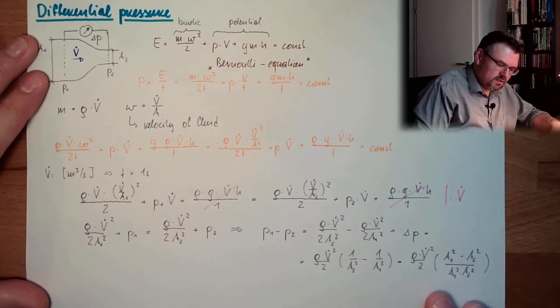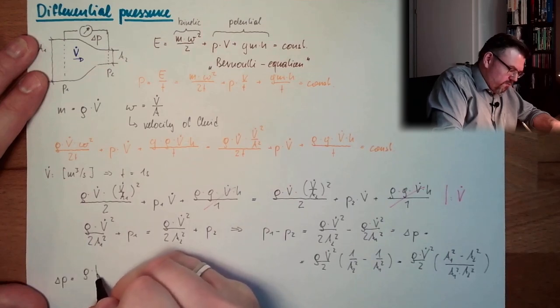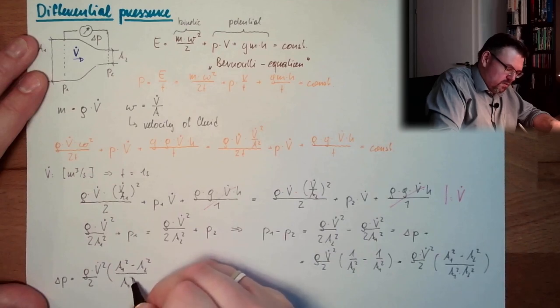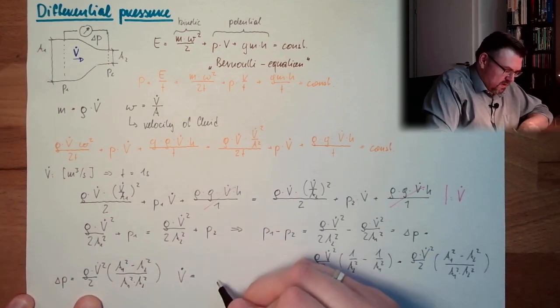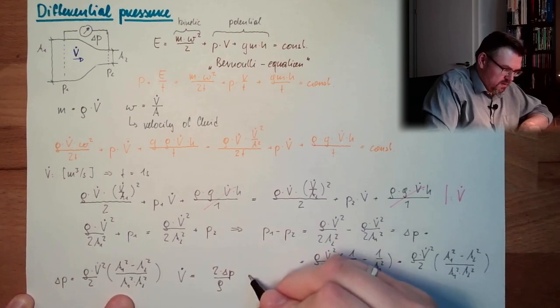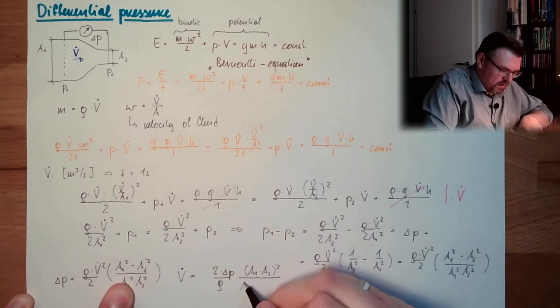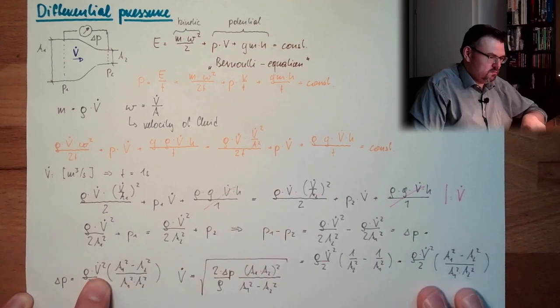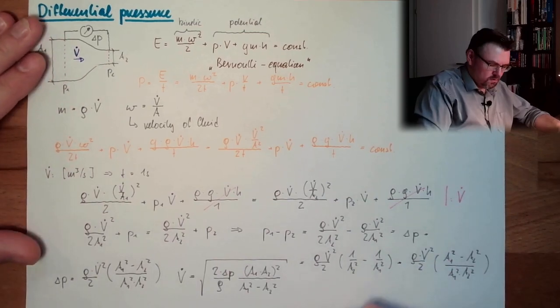So delta P, get this out. So actually this equals rho v-point squared half, 1 divided by A2 squared minus 1 divided by A1 squared. A2 squared minus A2 squared divided by A1 squared multiplied by A2 squared, brought this to the same base. Now I just have to, it's here written, delta P equals rho v-point squared half A1 squared minus A2 squared, divided by A1 squared.